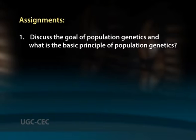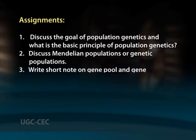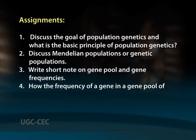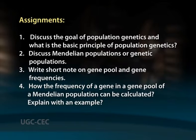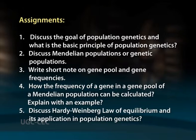I will give you certain assignments based on the discussions. One: discuss the goal of population genetics and what is the basic principle of population genetics. Two: discuss Mendelian populations or genetic populations. Three: write a short note on gene pool and gene frequencies. Four: how can the frequency of a gene in the gene pool of a Mendelian population be calculated? Explain with an example. Five: discuss Hardy-Weinberg law of equilibrium and its application in population genetics.